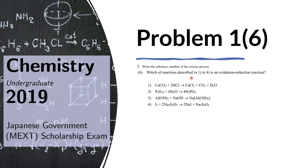Problem 1.6: Which of the reactions described in 1 to 4 is an oxidation-reduction reaction? A redox reaction is one where elements change their oxidation states. Checking reactions one to four, we immediately see that in reaction four, iodine changes oxidation state from zero to negative one — it is negative one because sodium is positive one. Therefore, reaction four is a redox reaction.